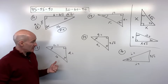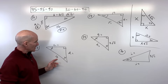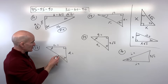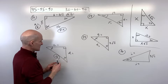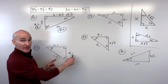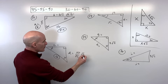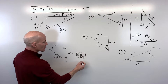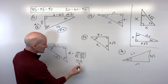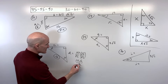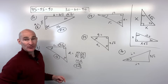For number 13, this is a 45-45-90 — rotated to be more challenging — and they're giving us the hypotenuse, the x√2 side. To get back to the leg, divide by √2: 10 divided by √2. We rationalize: 10√2 over 2, the 10 and 2 reduce, giving 5√2. Both legs are 5√2 since they're congruent.